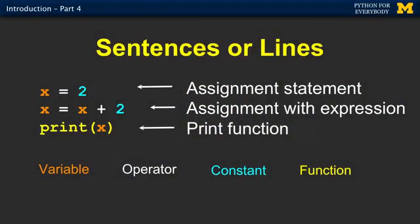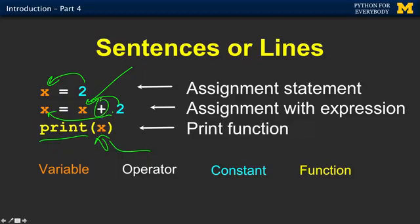Sentences are lines. When we write a program, we're writing a text file and we put a line and another line and another line. Each one of these is like a separate line. We have another assignment statement sticking the number two into the variable x, retrieving that two back, adding two to it, and sticking that sum back into x. Print is a function with a parameter x that's going to cause four to be printed out. We're using operators. This plus is an operator. The equal sign is an operator.